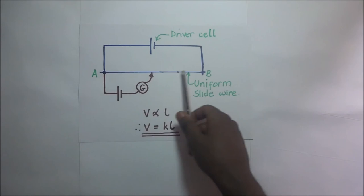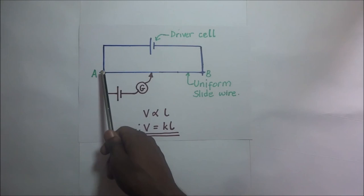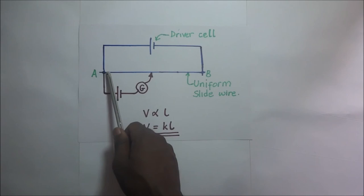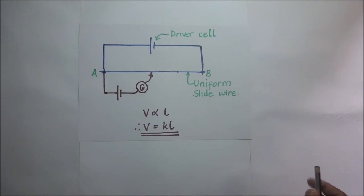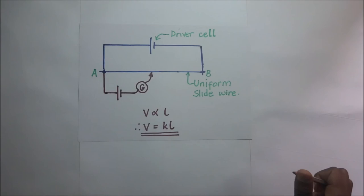Since the potential difference across the length of the wire is directly proportional to the length, we can easily get the potential difference across a portion of the wire from the expression V = kl, where k stands for the pd per unit length of that wire. In practice, the unknown potential difference is balanced against the slide wire by placing a jockey along different parts of the slide wire until the galvanometer shows no deflection.